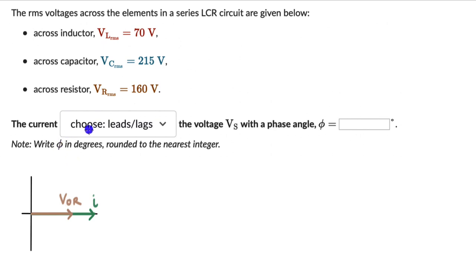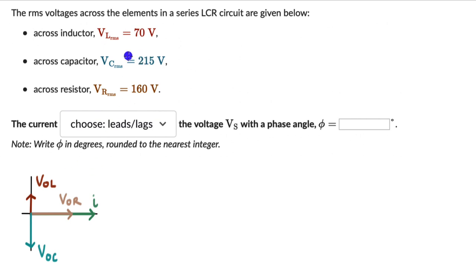The voltage across the inductor leads the current by 90 degrees, so it points vertically upward — that's how you show the voltage is ahead of the current by 90 degrees. For the capacitor, the voltage lags behind the current by 90 degrees, so it points downward. The length of the peak voltage across the capacitor is slightly more than V0L, since V_C(RMS) is more than V_L(RMS), meaning the peak voltage across the capacitor is greater than the peak voltage across the inductor.